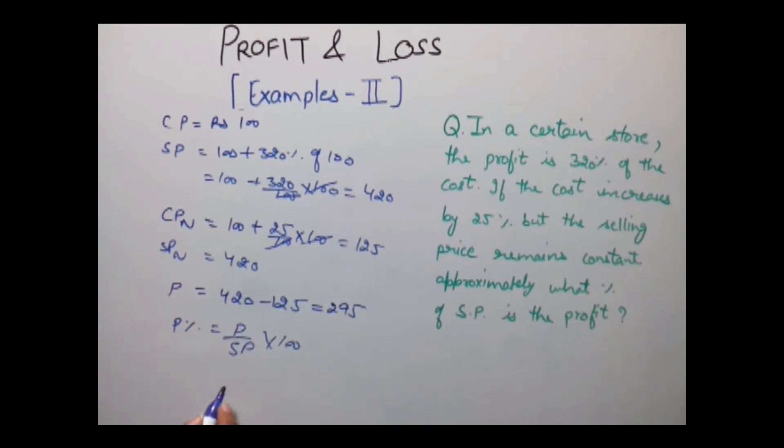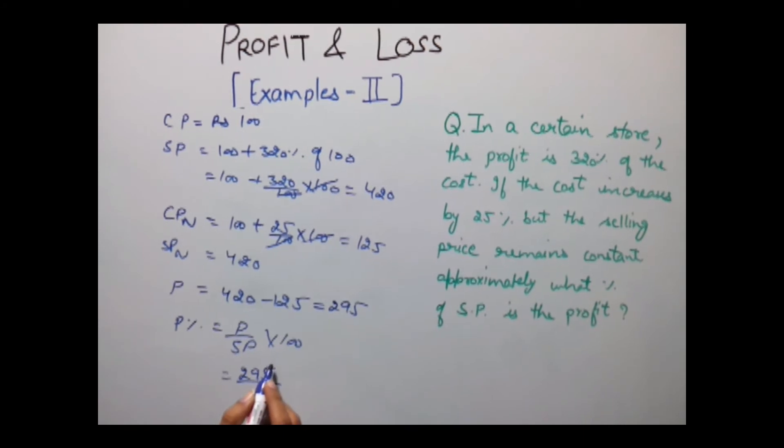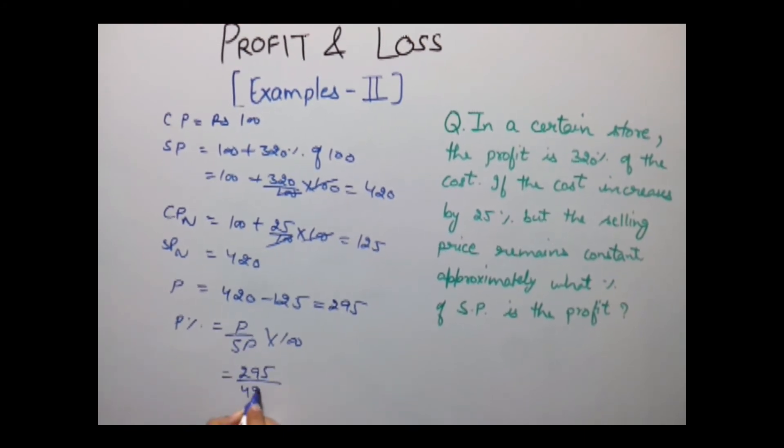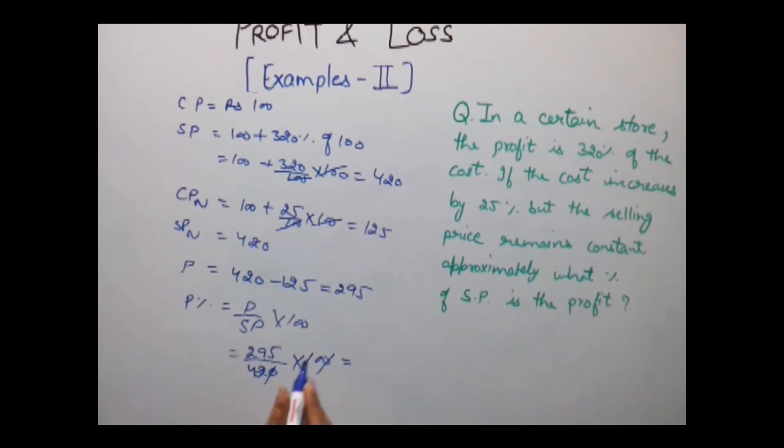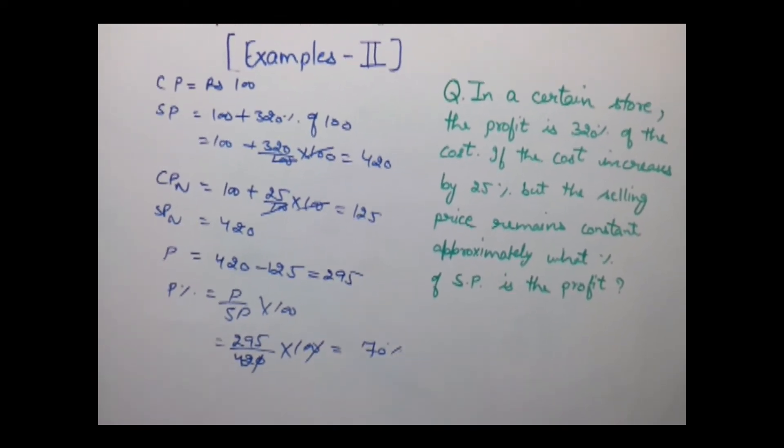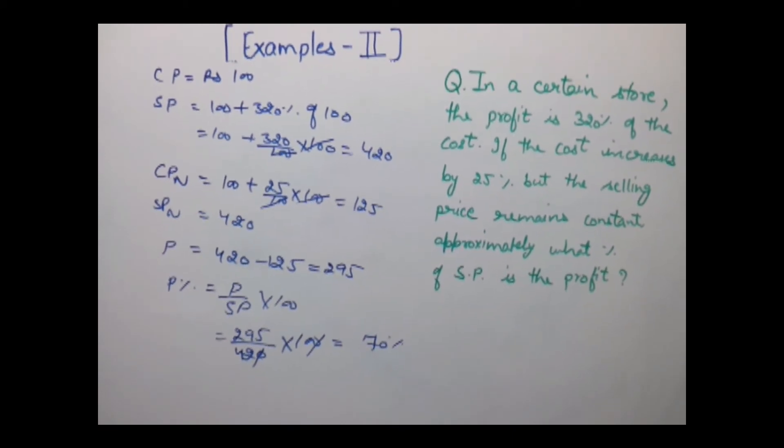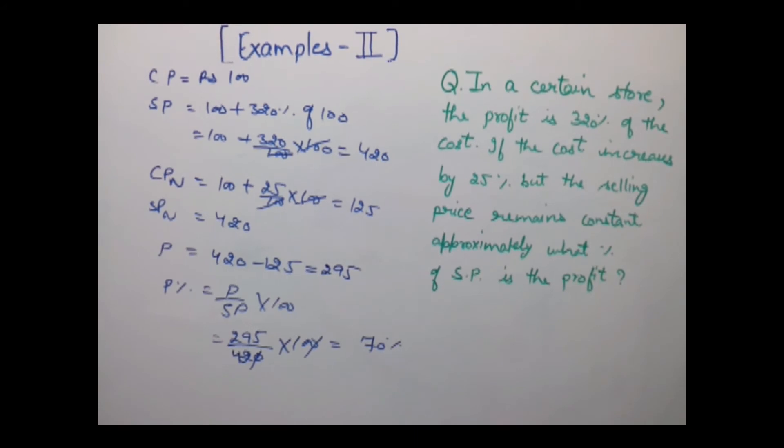Now profit is equal to 295 and our SP is 420 into 100. Now after solving this, this will come 70% as approximate. So they make around 70% of the selling price as their profit.